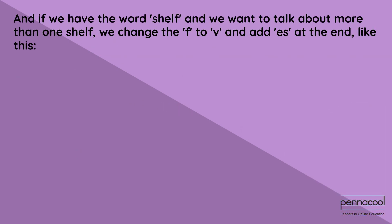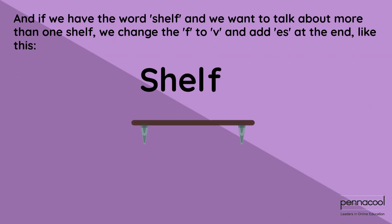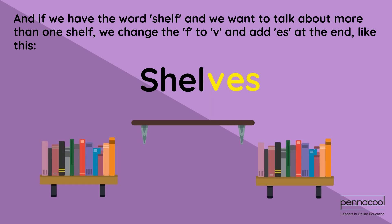And if we have the word shelf and we want to talk about more than one shelf, we change the F to V and add ES at the end like this. Shelves.